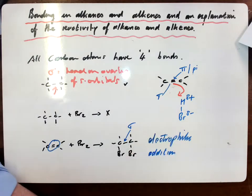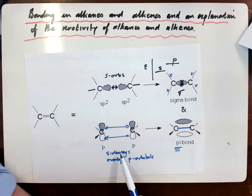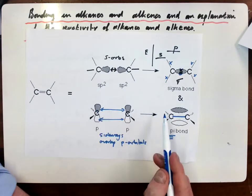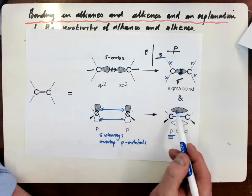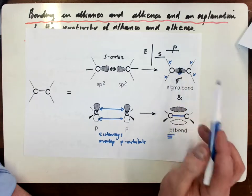In the alkene, you would talk about head-on overlap of S orbitals, giving you, first of all, the sigma bond. And then sideways overlap of the P orbitals, giving you this pi bond, which is an area of electron density above or below the plane of the sigma bond.